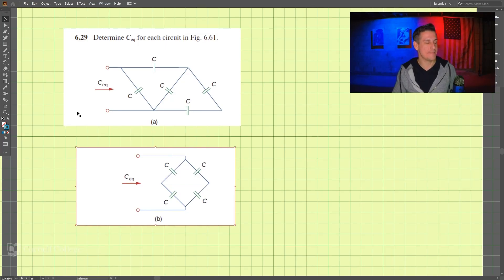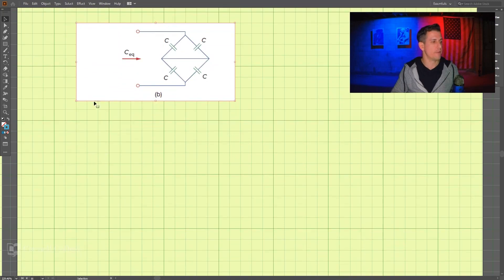This is problem 629, and we're solving for the equivalent capacitance for both A and B here. I'm going to move down B for right now, and we're just going to work on A.